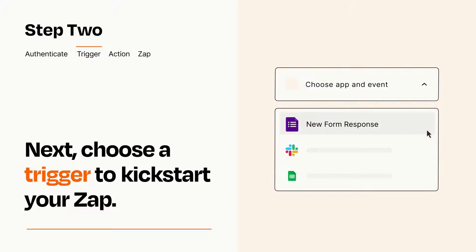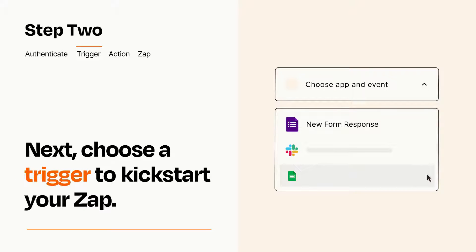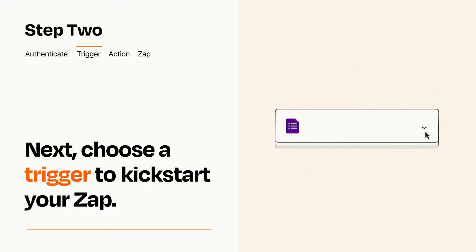Now let's set up your trigger, which is the event that starts your Zap. Pick the trigger event that you want from the list. When you set up this step, your Zap will pull in test data from your trigger app, that you'll see later when setting up your action app.